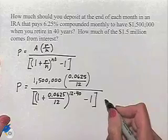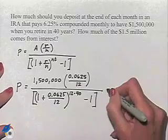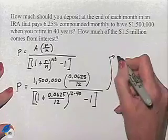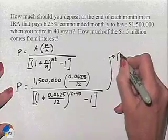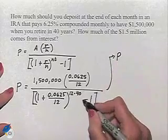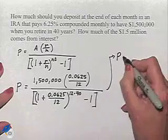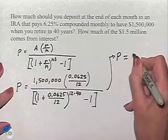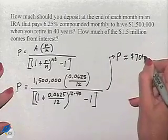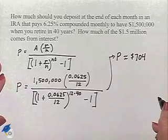Now again, this is calculator intensive. You're going to use your calculator in order to come up with an approximation for P. What you should do as a student is to double check by using your calculator to see if you're coming up with the same value that I'm coming up with here. And we come up with approximately $704.